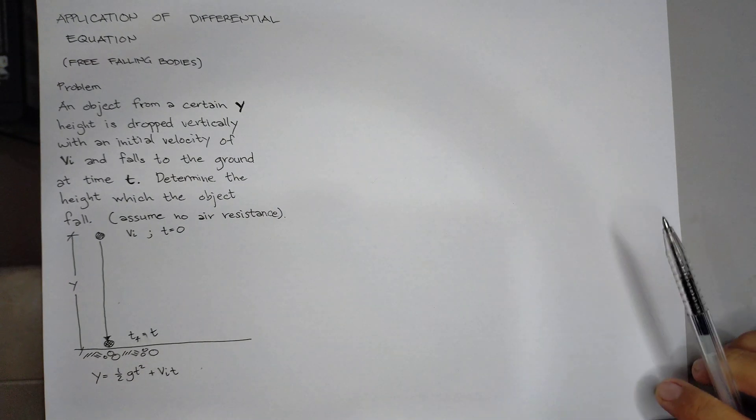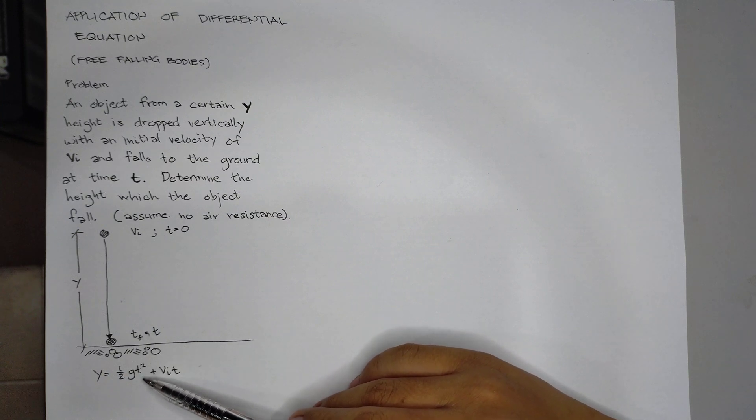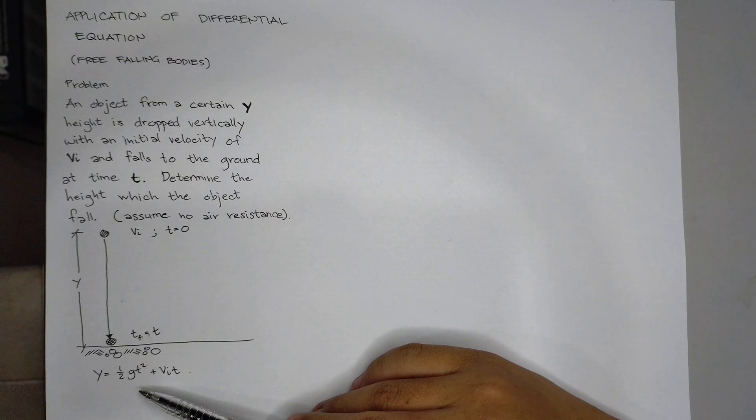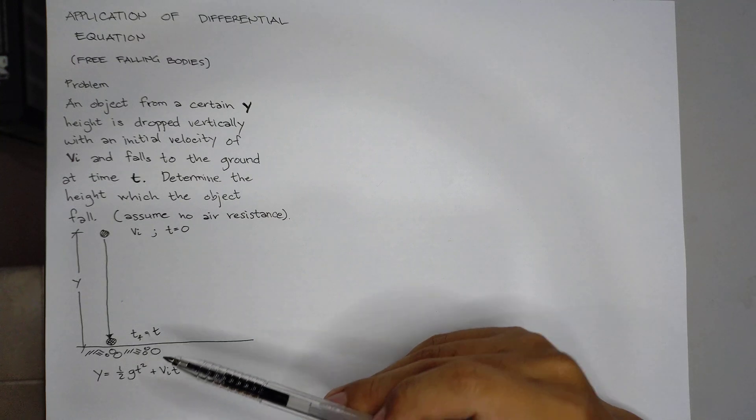and g is the acceleration due to gravity, and t is the time from which the object falls, and vi is the initial velocity.